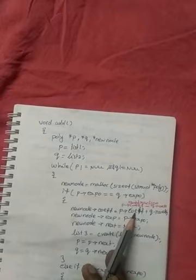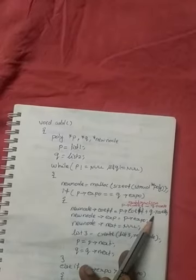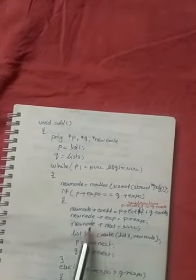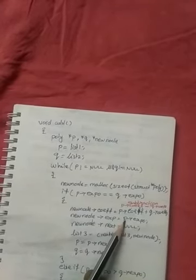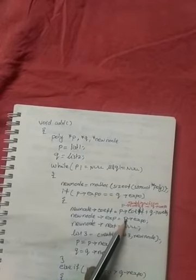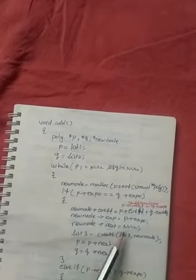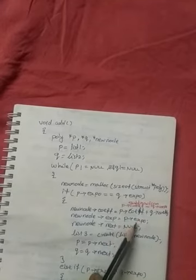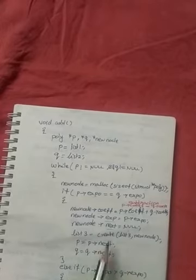When both exponents are equal, new node coefficient equals P coefficient plus Q coefficient — we add the coefficients of both polynomials. New node exponent equals P exponent, since both are equal. New node next is set to null. Then we call the create function: list three equals create list three with the new node, inserting it into the resultant list.